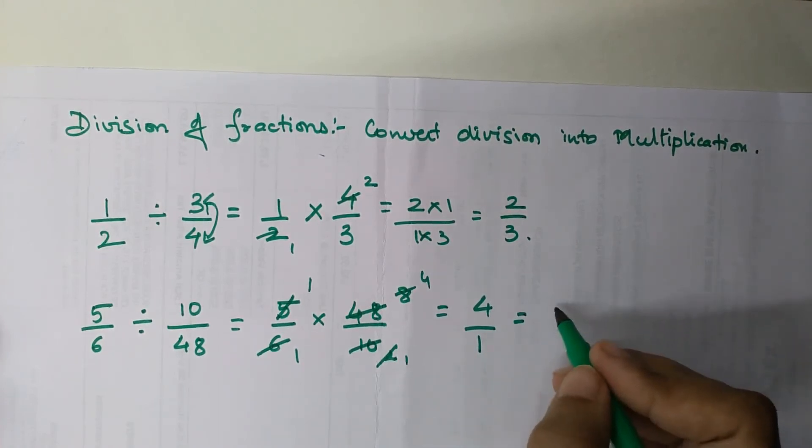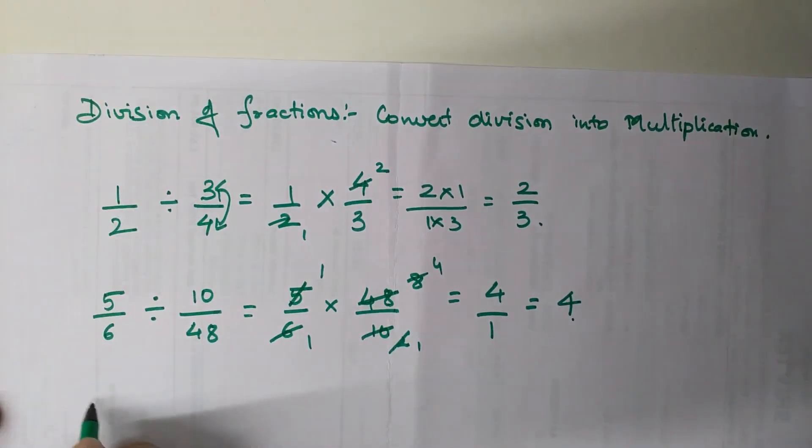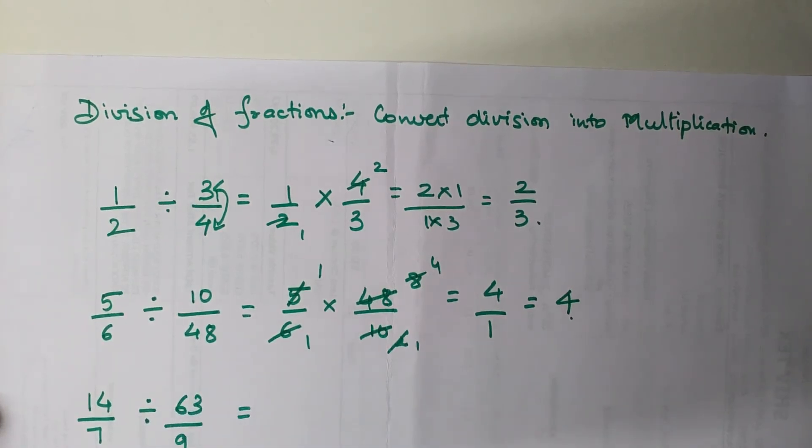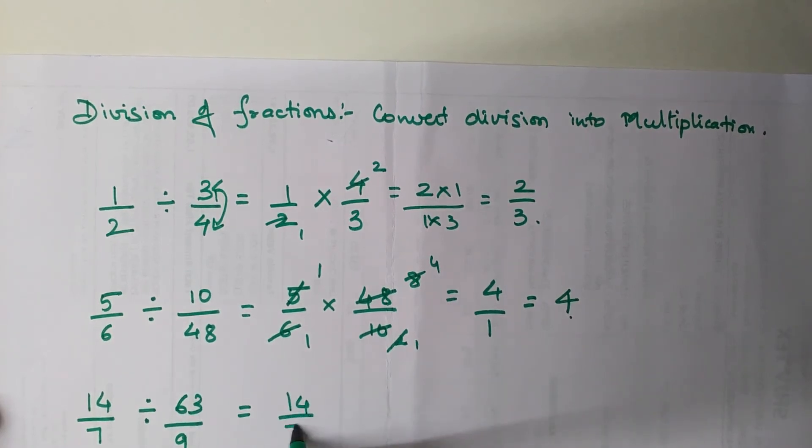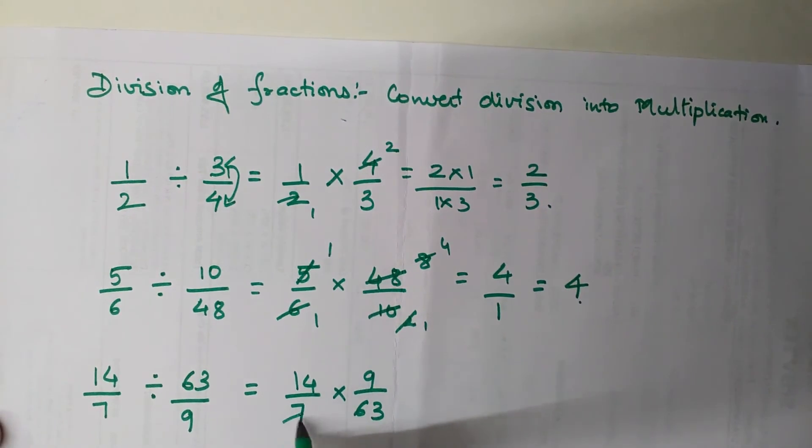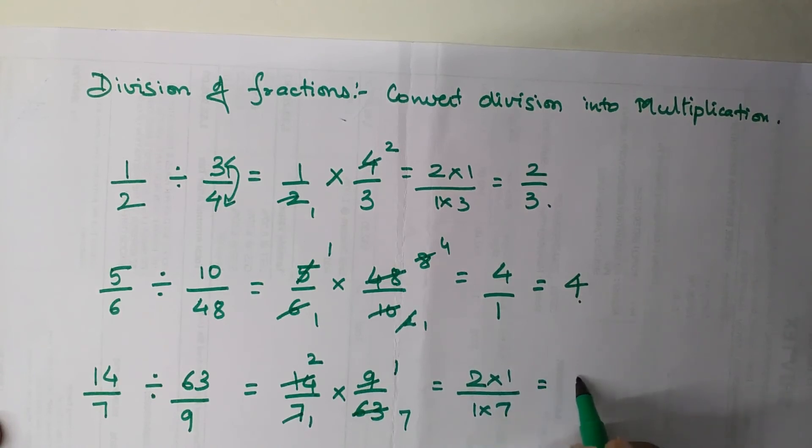Another example: 14/7 divided by 63/9. We write the first fraction as it is, multiply by 9/63. With cancellation, 7 goes into 14 twice and into 63 nine times, and 9 cancels with itself. The final answer is 2 times 1 upon 1 times 7, which is 2/7.